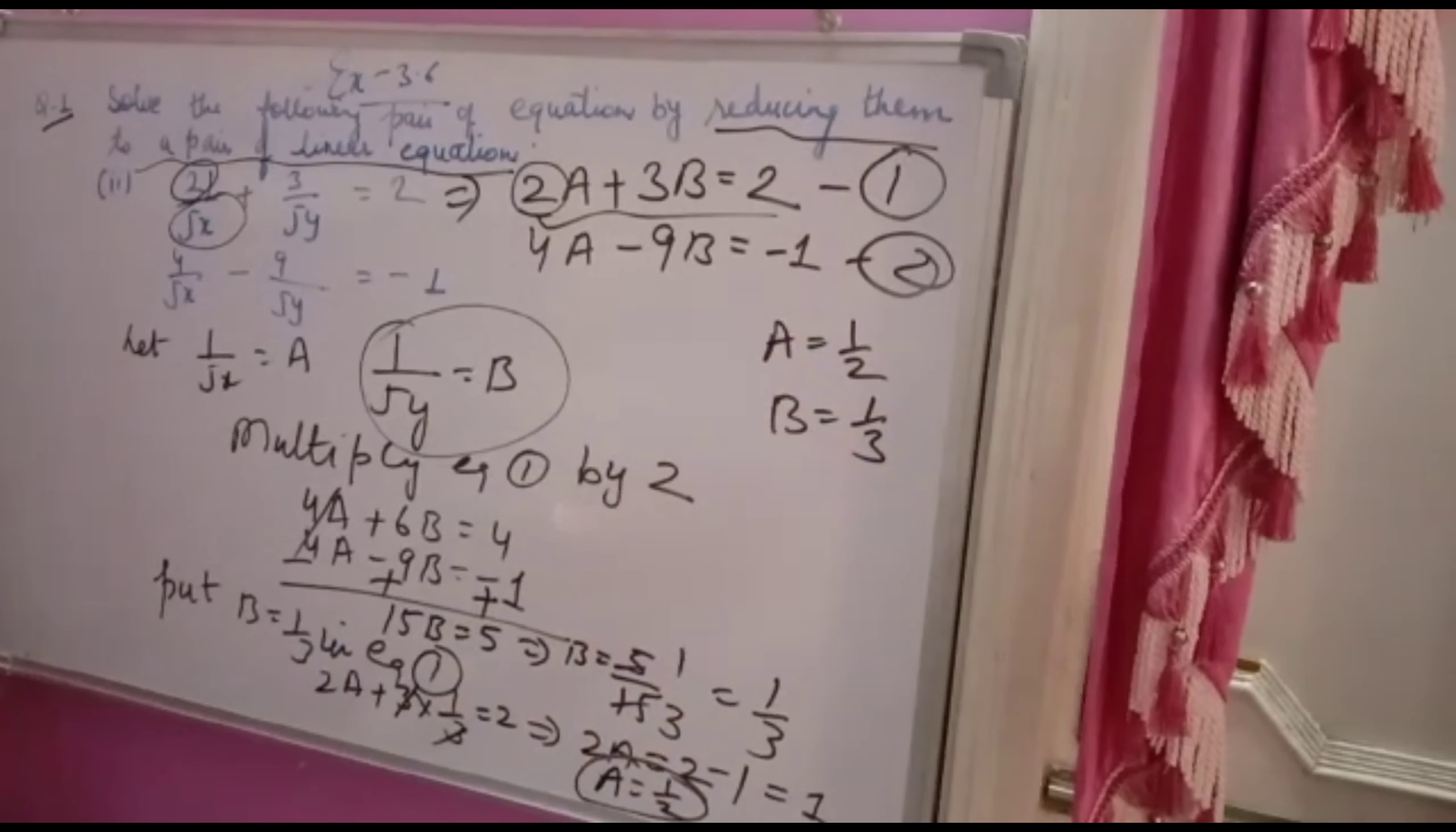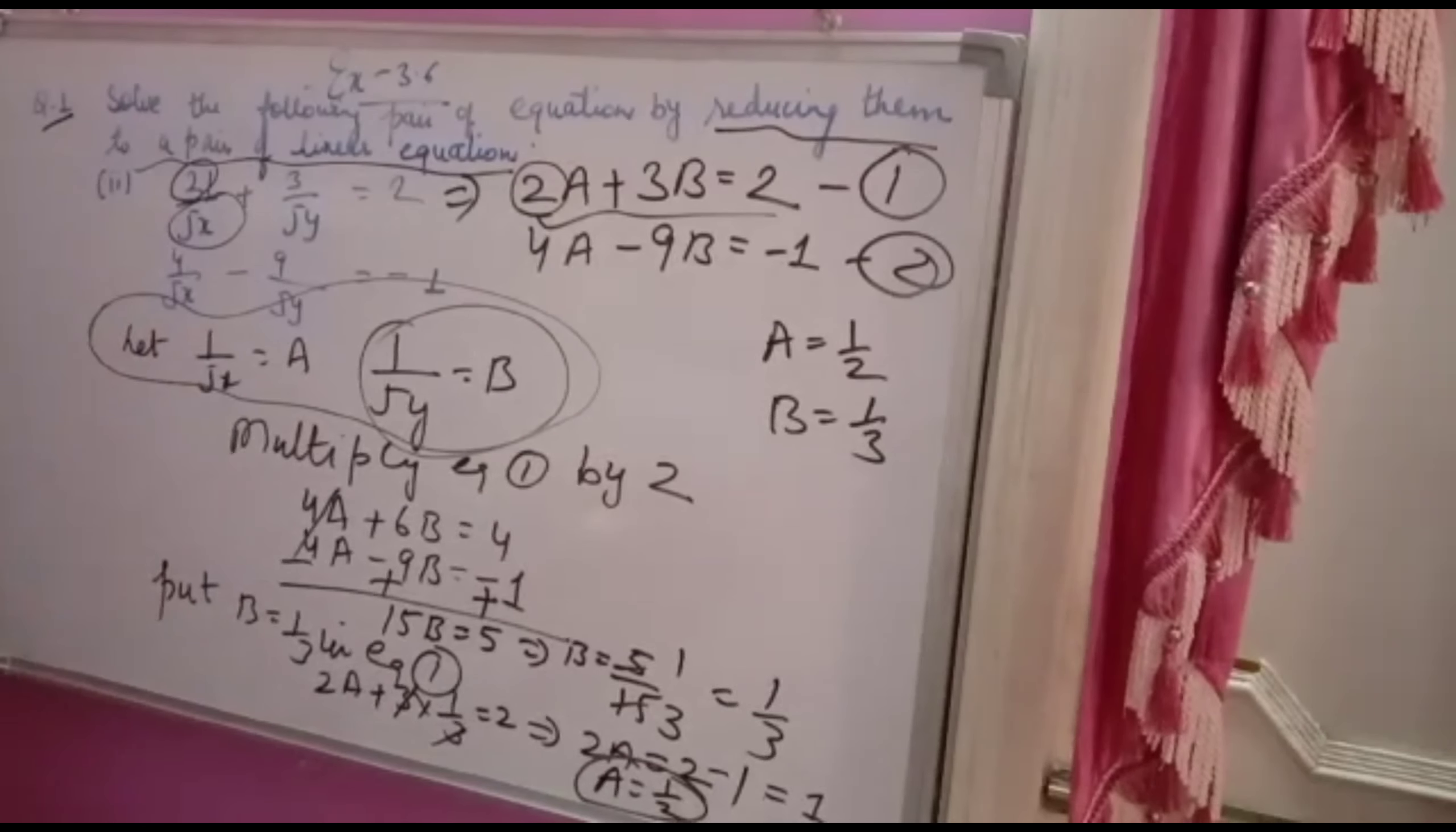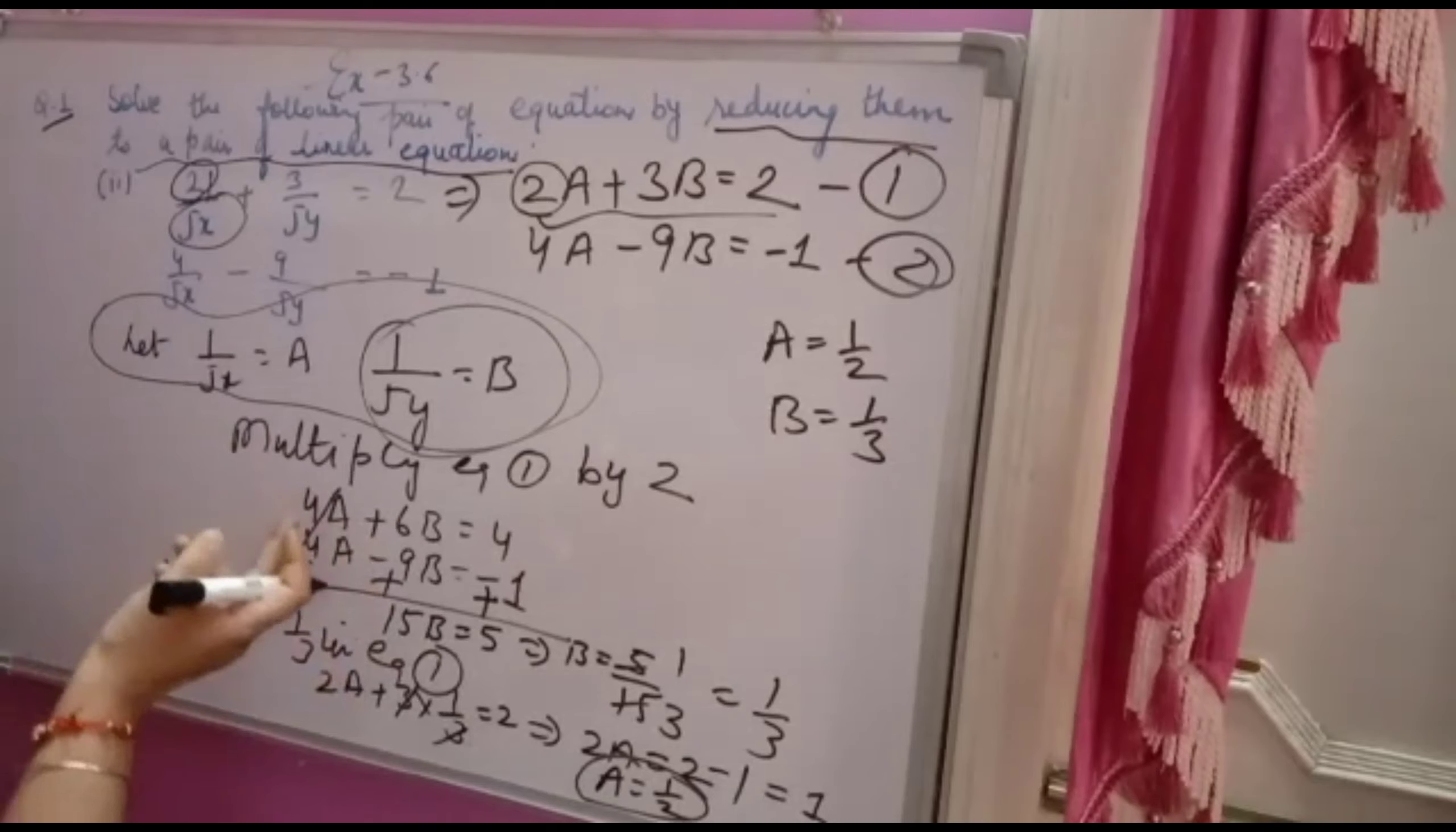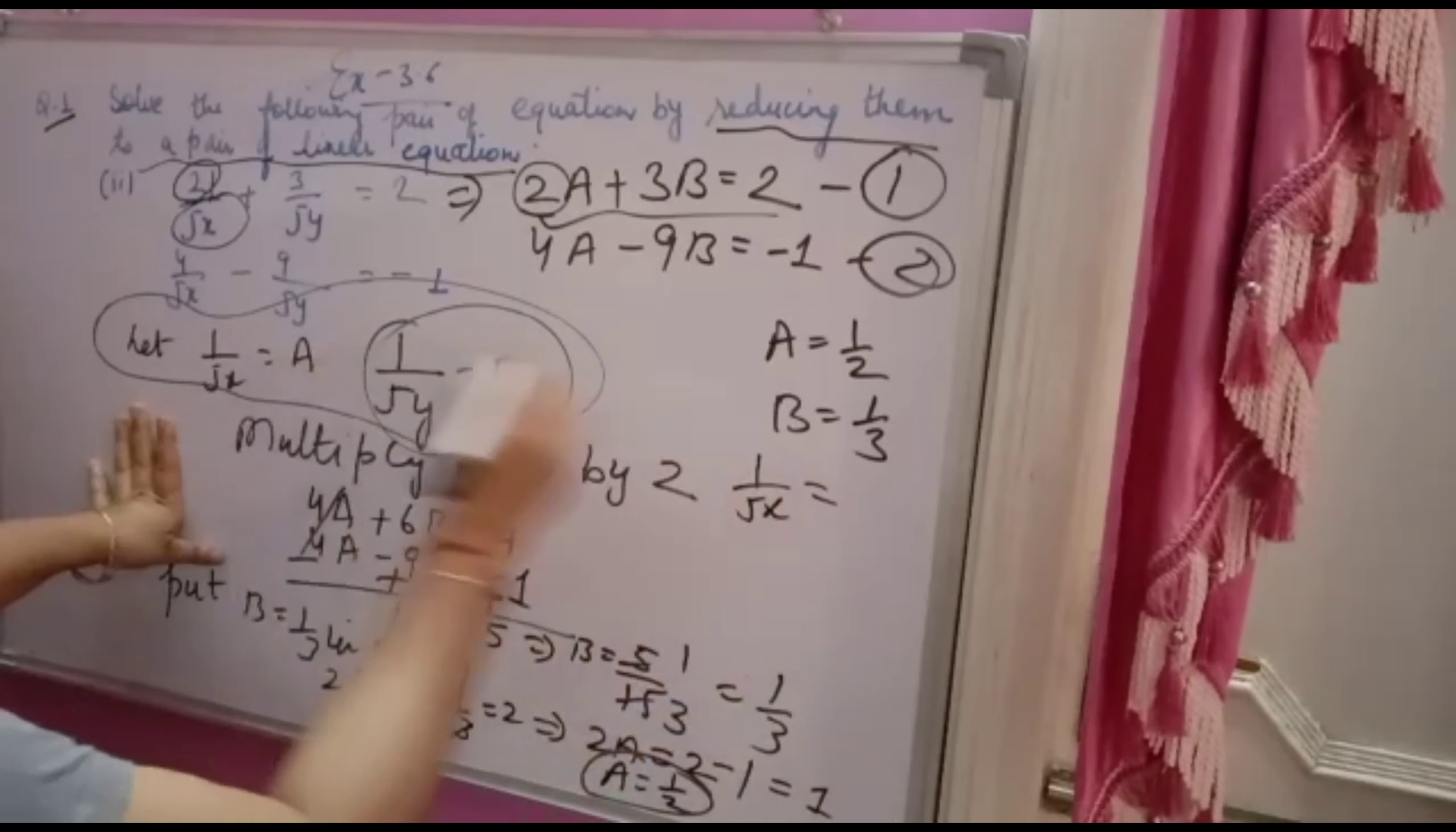Now don't leave here. A and B you assumed, but you want root x and root y. You want x and y if you have to solve. So firstly root x, then you will find x. So 1 over root x is equal to A is half.